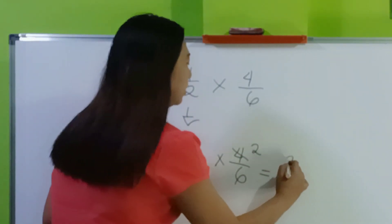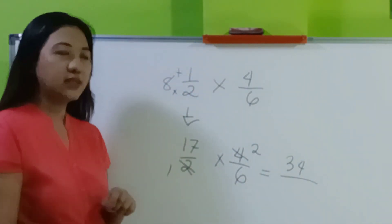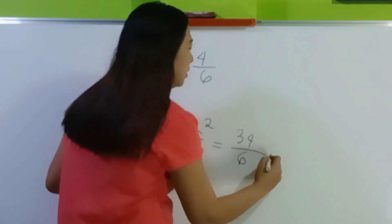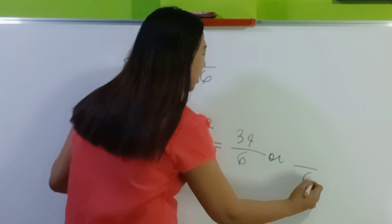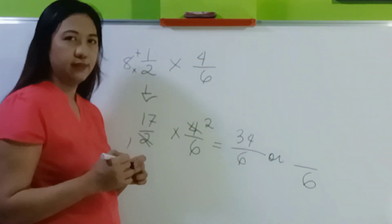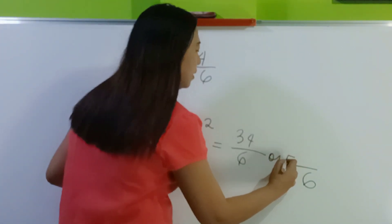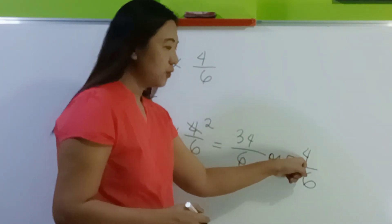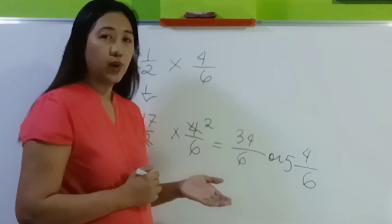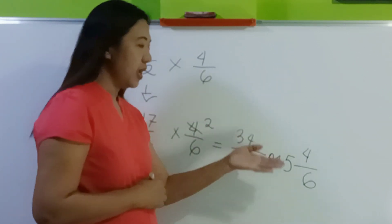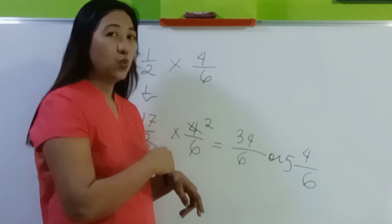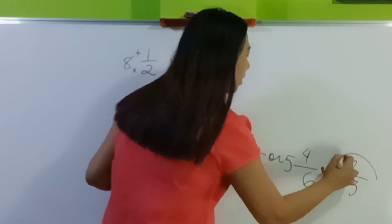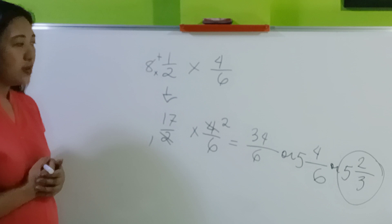17 times 2 is 34, and 1 times 6 is 6. Our answer is an improper fraction, so we change it to a mixed number. Copy the denominator 6. How many 6s are in 34? We have 5, with a remainder of 4. Now notice that 4/6 can still be reduced — both are even numbers. 4 divided by 2 is 2, 6 divided by 2 is 3. So the final answer is 5 and 2/3.